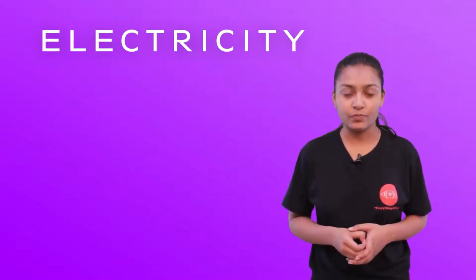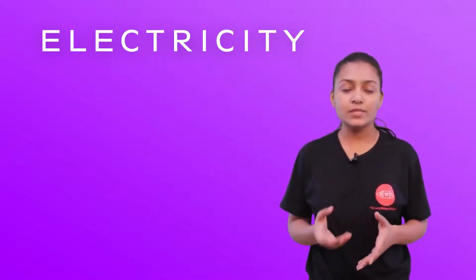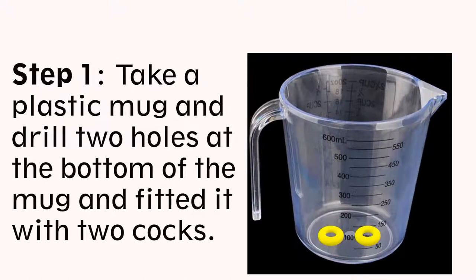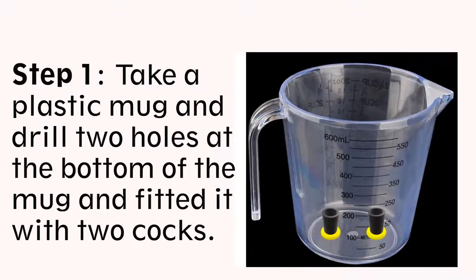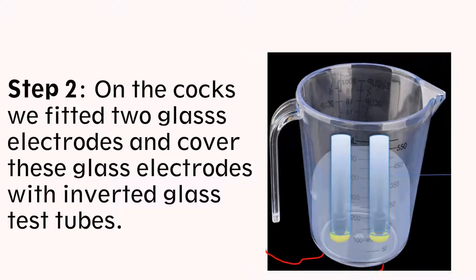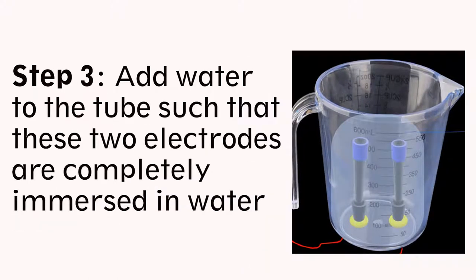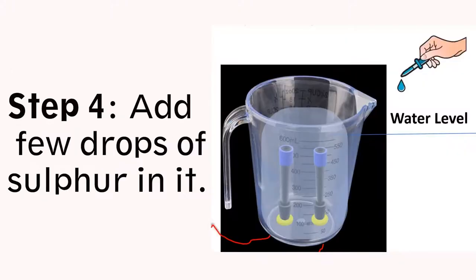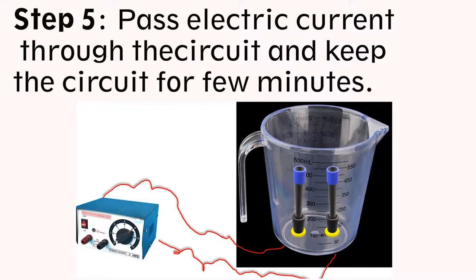Let us try to understand what happens when electricity is involved in the reaction. To understand that, we perform a simple experiment. We take a plastic mug and drill two holes at the bottom of the mug and fit it with two cocks. On the cocks, we fit two glass electrodes. Cover these two glass electrodes with inverted glass test tubes. Now add water in the tube such that these two electrodes are completely immersed in water. Add a few drops of sulfur in it. Pass electric current through the circuit and keep the circuit for a few minutes.